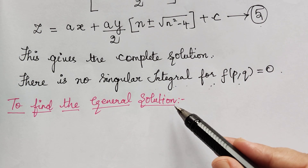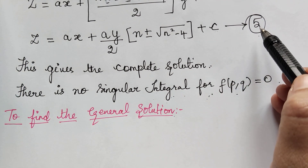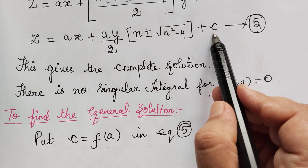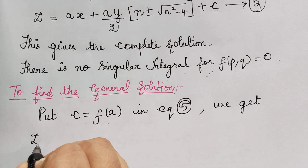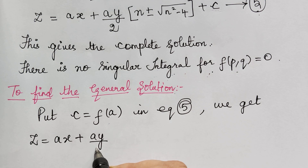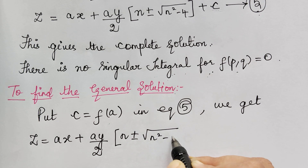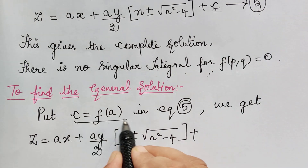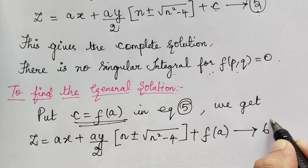In order to find the general solution, we have to put c = f(a) in equation 5. When we do so, we get z = ax + a·(y/2)·[n ± √(n² − 4)] + f(a). Mark this as equation 6.